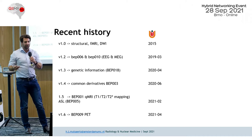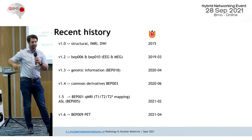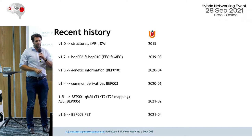Four years after the initial structural fMRI and DTI focus, EEG and MEG were included. Then one year ago we got genetic information and common derivatives — the start of also having derivatives in a BITs format, organized by subject and scan types, similar to raw data but per pipeline output, such as derivatives for ExploreASL or fMRIprep.